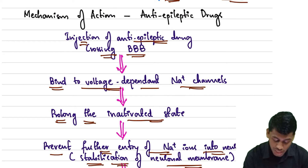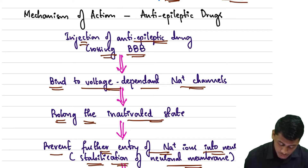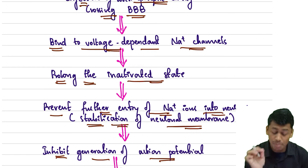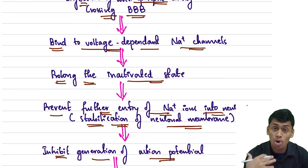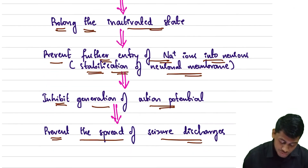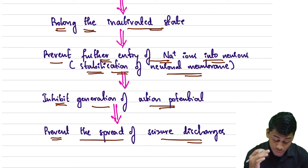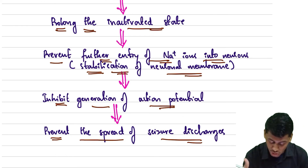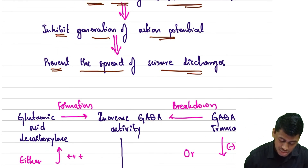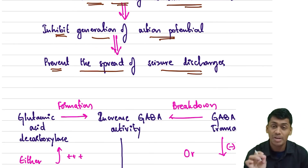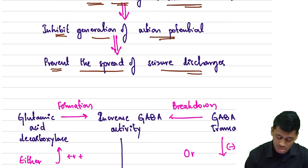To summarize the sodium channel mechanism: the anti-epileptic drug crosses the blood-brain barrier, binds to voltage-dependent sodium channels, prolongs their inactivated state, prevents further sodium ion entry into the neuron, stabilizes the neuronal membrane, inhibits generation of new action potentials, and finally prevents the spread of seizure discharges.